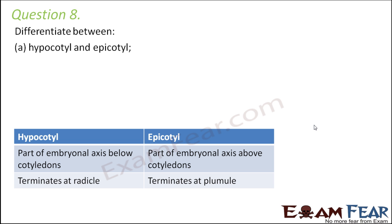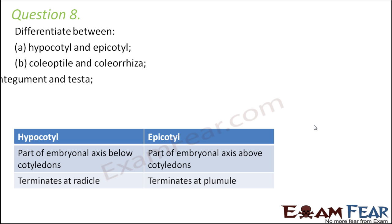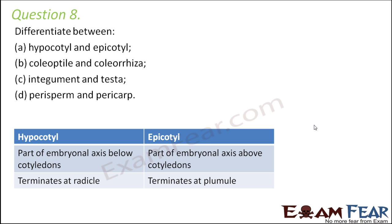Differentiate between hypocotyl and epicotyl, coleoptile and coleorhiza, integument and testa, perisperm and pericarp. Starting with hypocotyl and epicotyl: 'hypo' means below, so hypocotyl is the part of the embryonal axis below the cotyledons, and epicotyl is above the cotyledon. Hypocotyl terminates at the radicle and epicotyl terminates at the plumule.